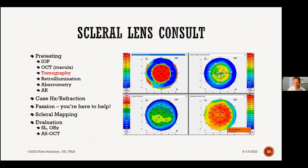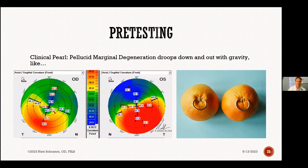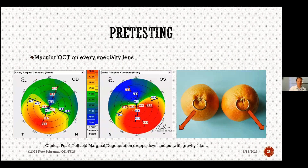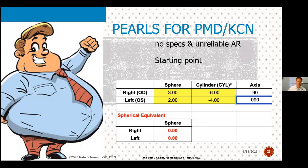Tomography on all patients is important — check the posterior float. Good clinical pearl: PMD, pellucid marginal degeneration. One of my cornea specialist friends, Dr. Jenny Wu, explains to patients how the cornea goes down and out with gravity — it's displaced temporally and inferiorly. I like to explain it as a man with a belt: it's thin where the belt is, but the cornea protrudes below.